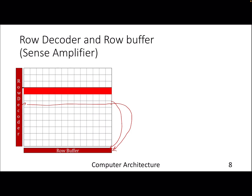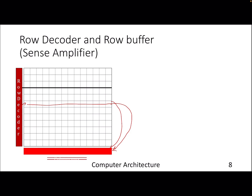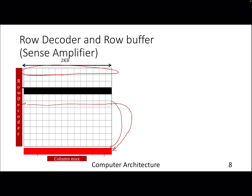The process is: select a row, put it in the row buffer. Once you have the row in the row buffer, you find a particular column and respond with that column. Typically the size of rows is in kilobytes — 2KB, 4KB, 8KB, or 16KB. Each bank has one row buffer.